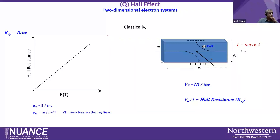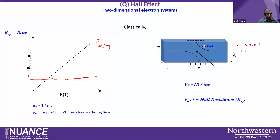Now let us consider the Hall effect in a two-dimensional electron system. But before that, let us look at the classical picture in 3D. Hall voltage is proportional to B, so Hall resistivity will be proportional to magnetic field B. If we increase the magnetic field B, we would expect the Hall resistance to increase linearly. The transverse resistivity is ρ_xy and the longitudinal resistivity is ρ_xx. This is what we would expect classically.